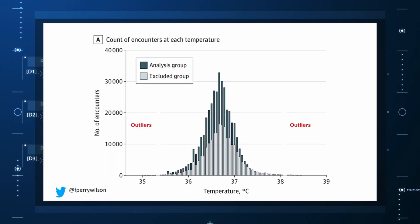They use a technique called LIMIT – Laboratory Information Mining for Individualized Thresholds. It works like this. Take all the temperature measurements and then identify the outliers – the very tails of the distribution.